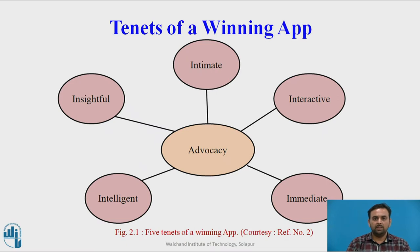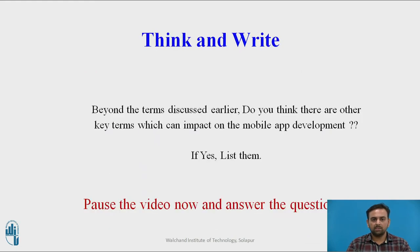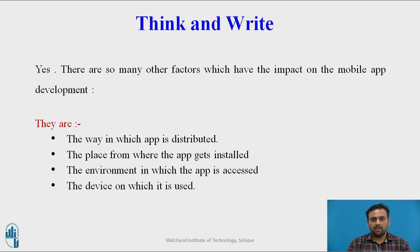These are the five tenets of the winning app. First one is intimate — the app should feel like it belongs to the user. Interactive — the app should be interactive with the user. Immediate — in the sense of response, it should be responsive to the user. Next, it should be intelligent and insightful to the user. Now, beyond these terms discussed, do you think there are any other terms which have an impact on mobile app development? Yes — they are the way in which the app is distributed, the place from where the app is installed, the environment in which the app is accessed, and the device which is used.